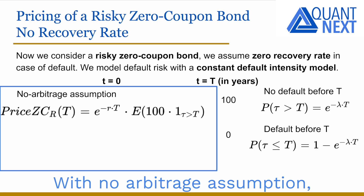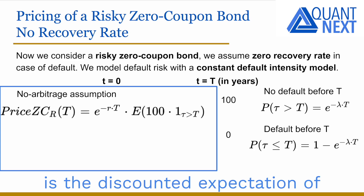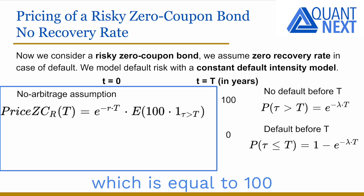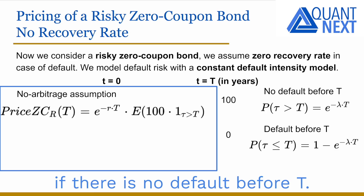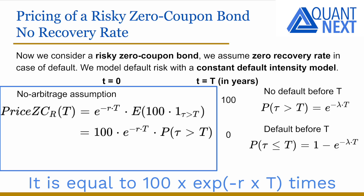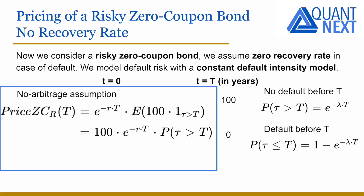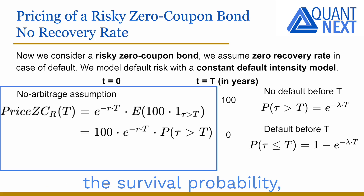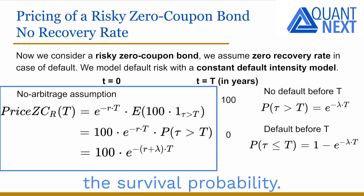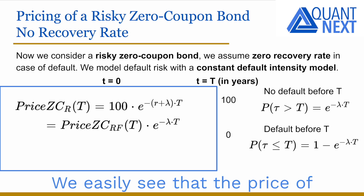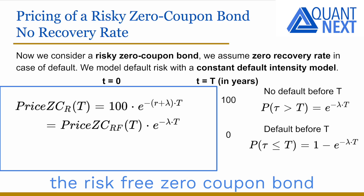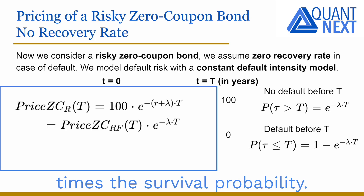With the no-arbitrage assumption, the price of the bond at t equals zero is the discounted expectation of the final payoff, which is equal to 100 if there is no default before t. With continuous compounding, it is equal to 100 times the exponential of minus r times t, times the survival probability. We can see that the price of the risky zero coupon bond equals the price of the risk-free zero coupon bond times the survival probability.